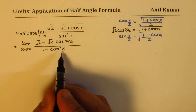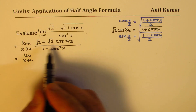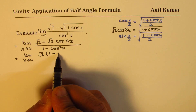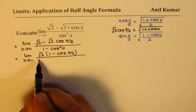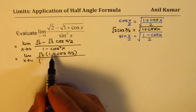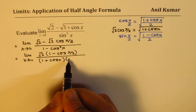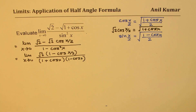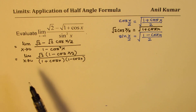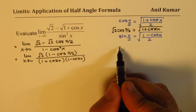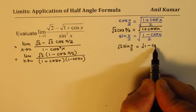With 1 minus cos²x in the denominator, we take square root 2 as common in the numerator, giving 1 minus cos(x/2) upstairs. We write the denominator as a product of sum and difference: 1 plus cos x times 1 minus cos x. Then 1 minus cos x can be converted back using the half-angle formula, giving square root 2 times sin(x/2).